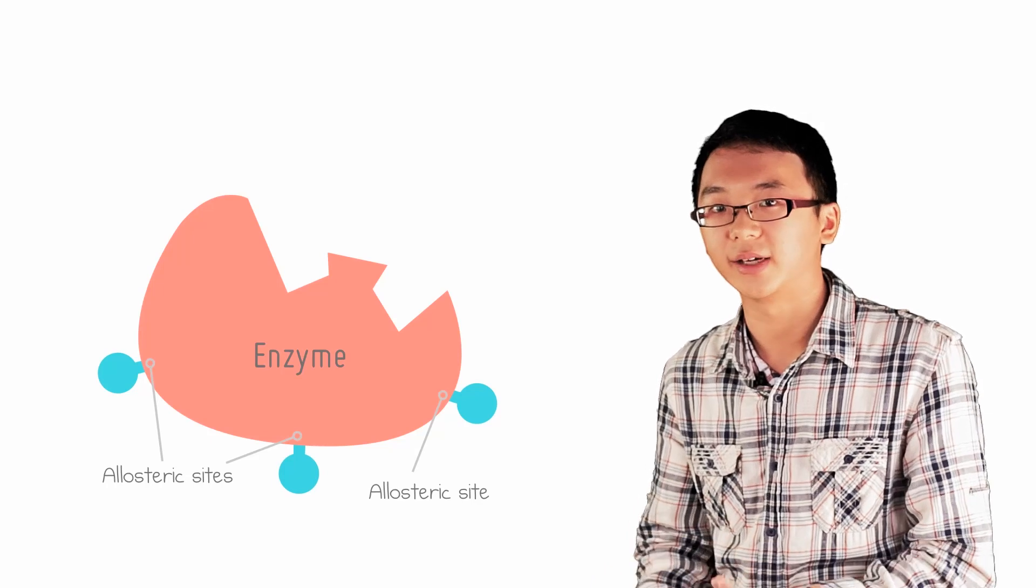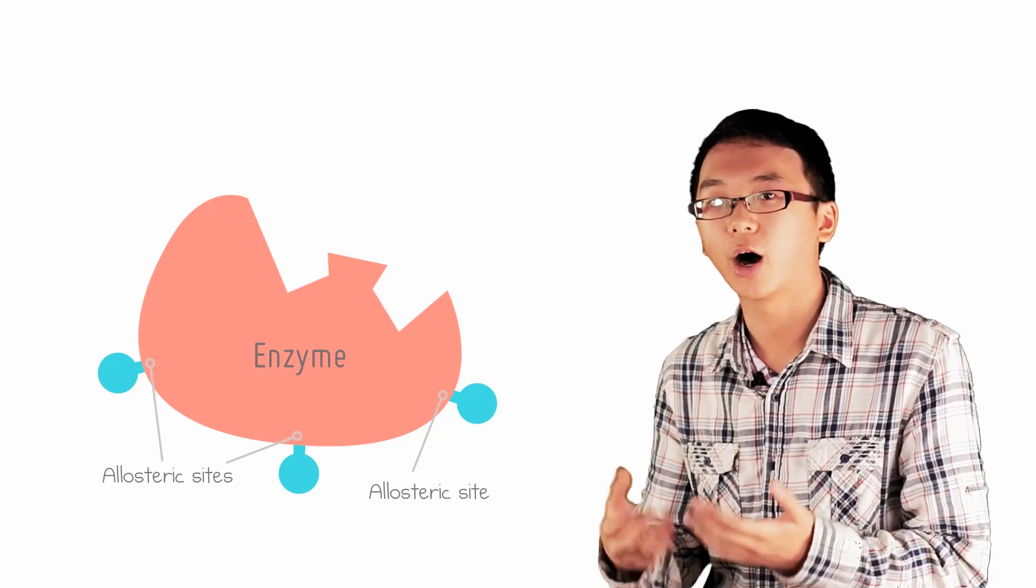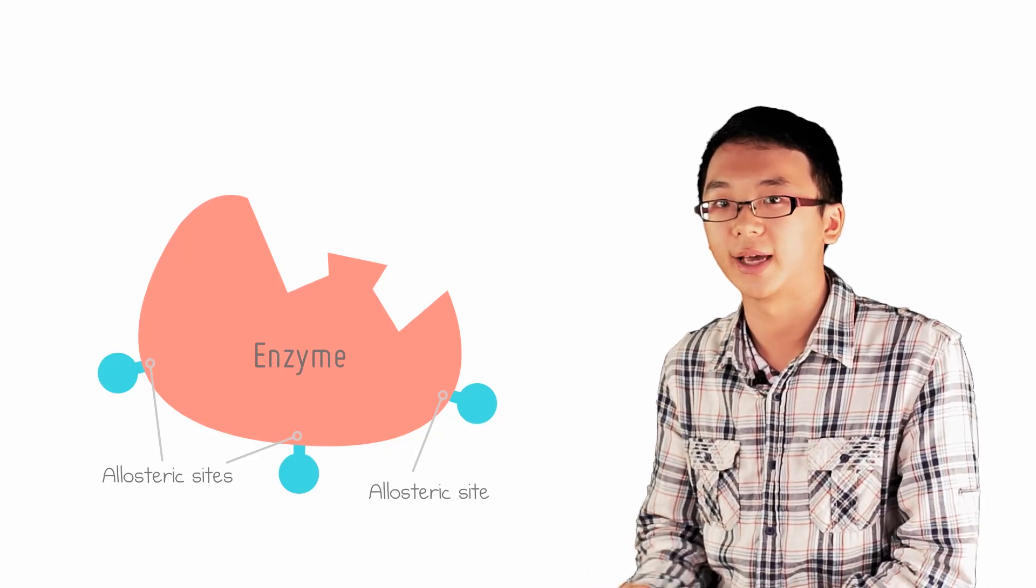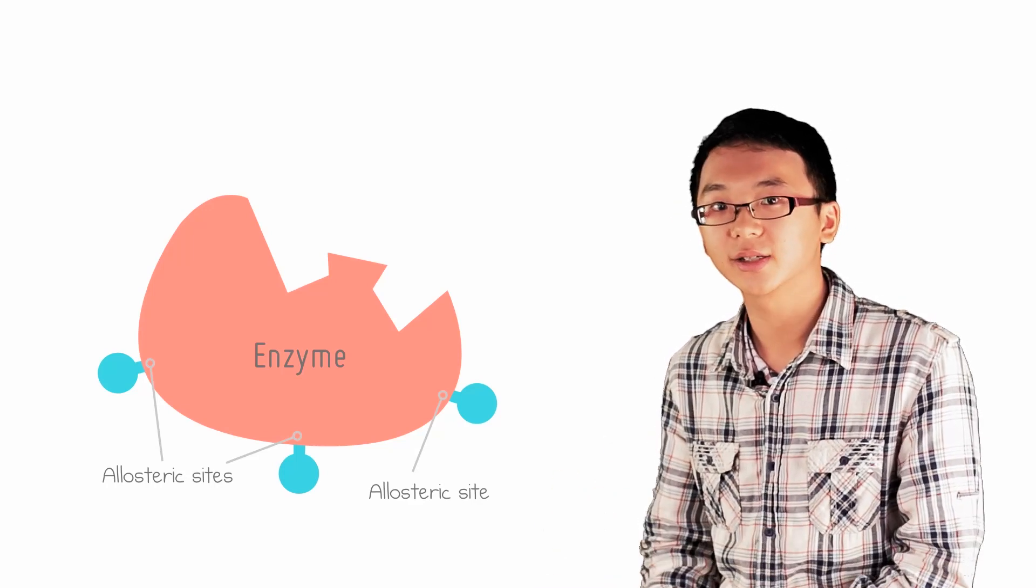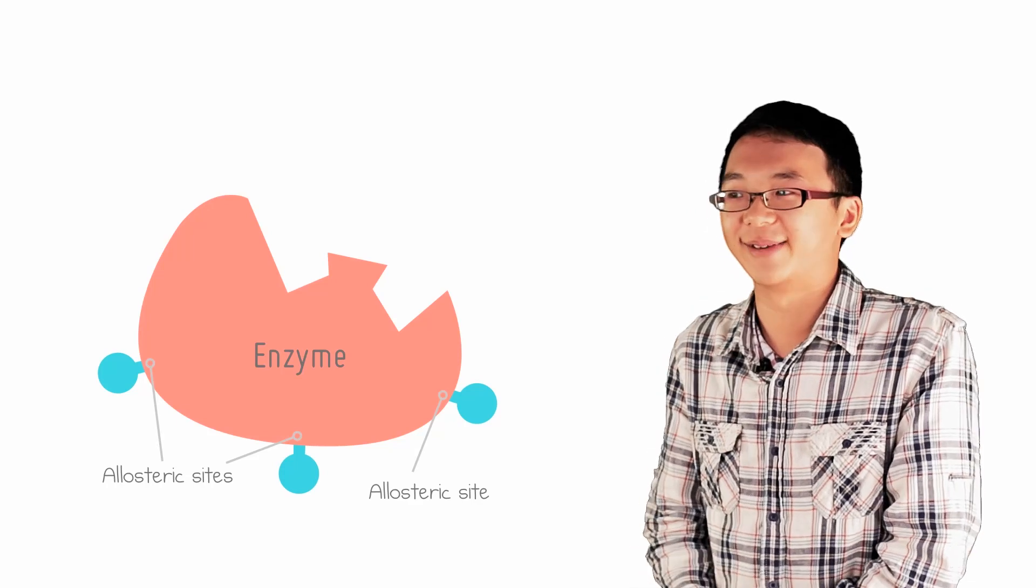These sites can be bound to activators or inhibitors and they can alter the activity of the enzyme. This is what is known as allosteric regulation, using allosteric sites to regulate the enzyme activity.